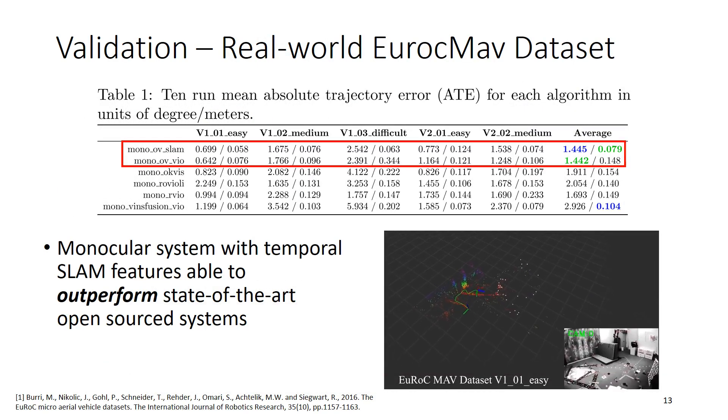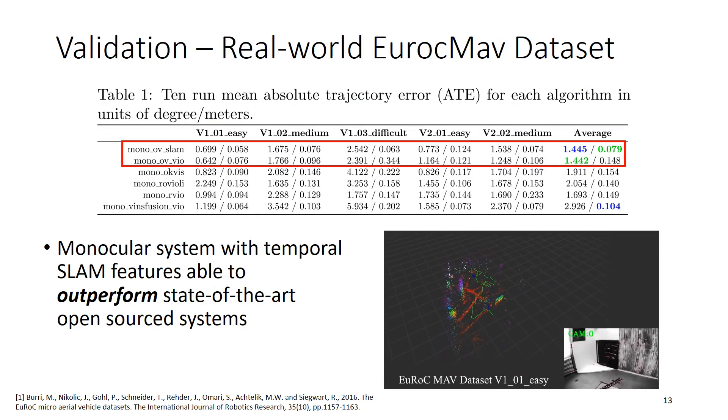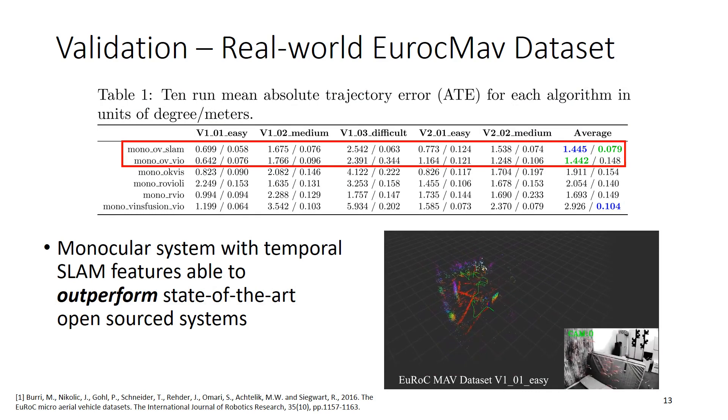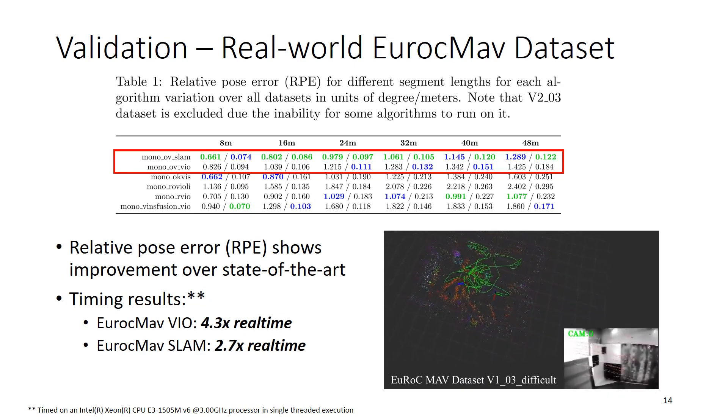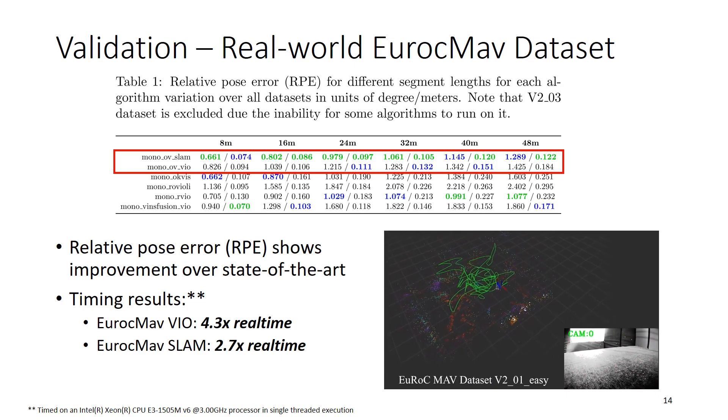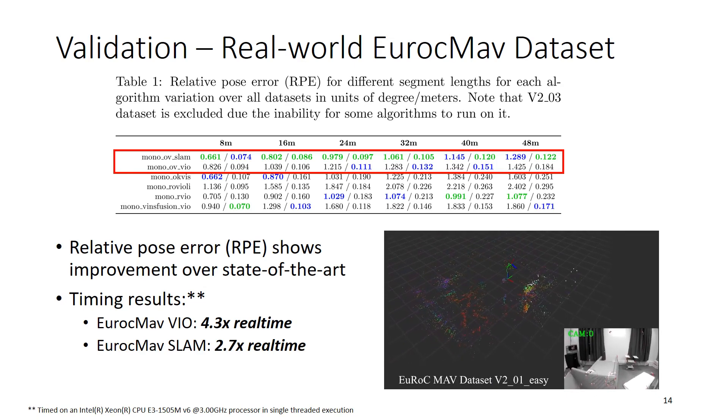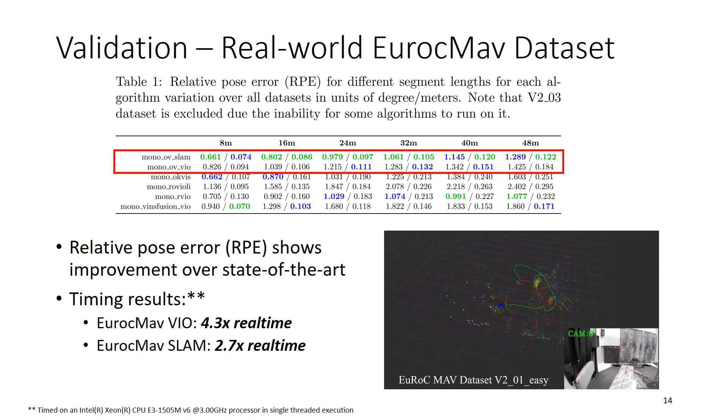Looking at some real world results versus existing open source systems, we are able to outperform state-of-the-art open source systems. In this case, we're on the EuRoC MAV dataset. Looking at another error metric, the relative pose error, we also show improvement over the state of the art. One of the things I want to draw attention to is that we are able to process faster than real time, single threaded on a laptop CPU.